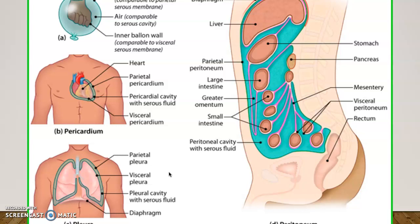We have different serous membranes — membranes that have a watery fluid within them — and they surround all of our organs in the thoracic and abdominal cavities. Our kidneys are behind all of that, so they're called retroperitoneal, but for the most part our organs are covered in these serous membranes.